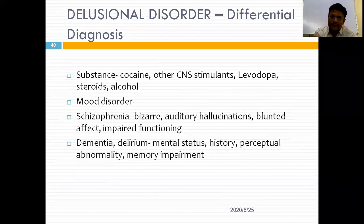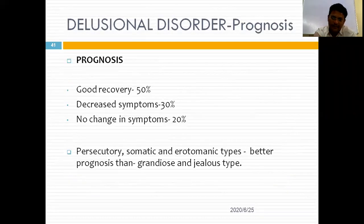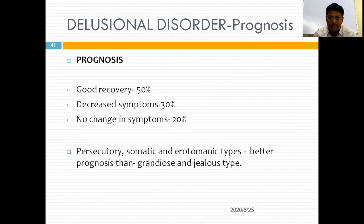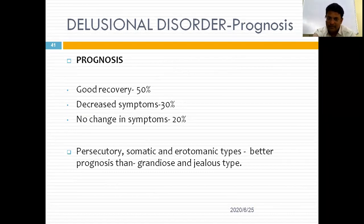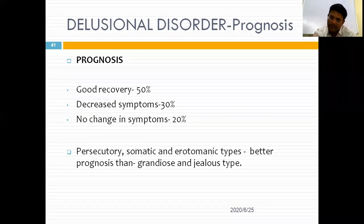The prognosis of delusional disorder is better than schizophrenia: 50% recovery rate, 30% decreased symptoms requiring continuous medication, and 20% no change. Persecutory, somatic, and erotomanic types have good prognosis, while grandiose and jealous types have poorer prognosis.